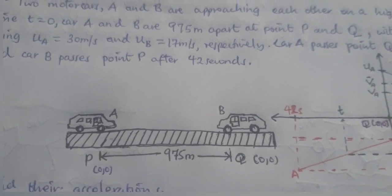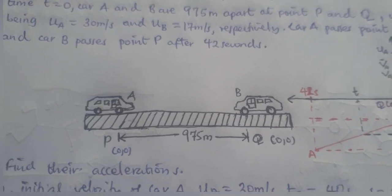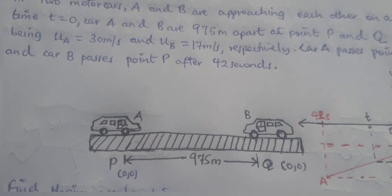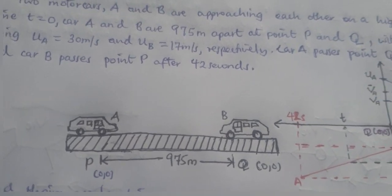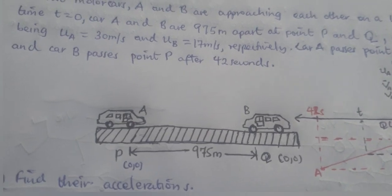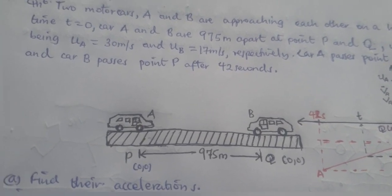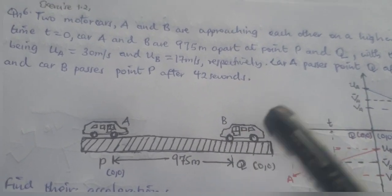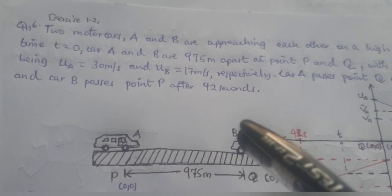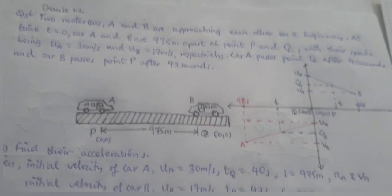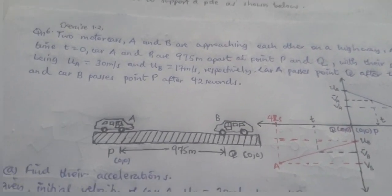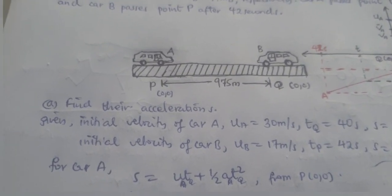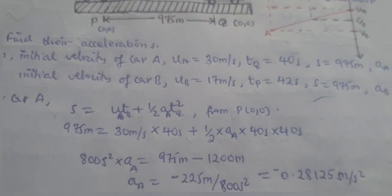We are given the initial velocity for car A and the initial velocity for car B, and then the time for when car A will take to reach point Q and the time when car B will take to reach point P. We are asked to find the accelerations for car A and car B from this data.